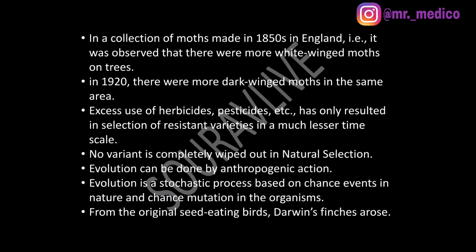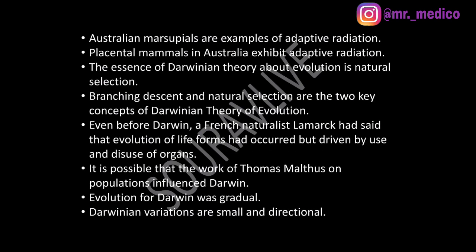From the original seed-eating bird, Darwin's finches arose — the seed-eating bird is their ancestor. Australian marsupials are an example of adaptive radiation. Placental mammals in Australia also exhibit adaptive radiation. The essence of Darwinian theory of evolution is natural selection. Branching descent and natural selection are the two key concepts of Darwinian theory of evolution.